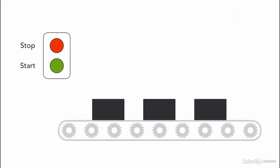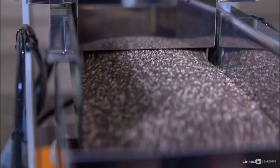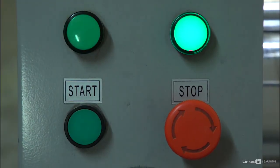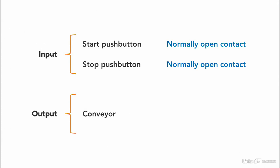For part one, the example is a normally open push button to start a conveyor in a manufacturing setting. As soon as the operator pushes the start push button and lets go, the conveyor starts and stays on. There is a stop push button, and once the operator presses it, the conveyor stops. The stop push button is a normally open relay as well. So start and stop push buttons are inputs — both are normally open contacts — and the conveyor is an output.